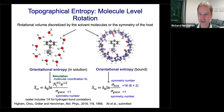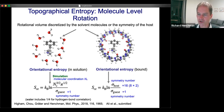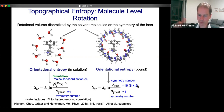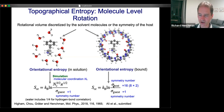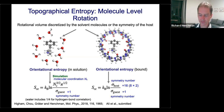For a host-guest system, the number of orientations for the guest depends on the symmetry of the host. This particular host has eightfold symmetry about its axis and twofold symmetry through the plane, giving 16 orientations of a molecule when bound in the host. That's the theory for orientation entropy for a molecule bound to a host or in solution.